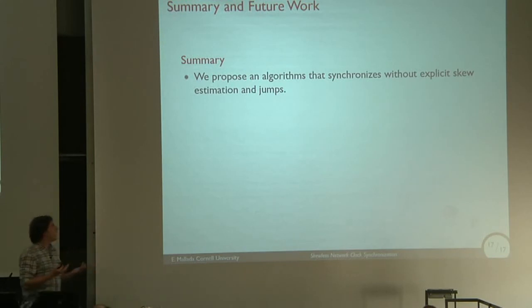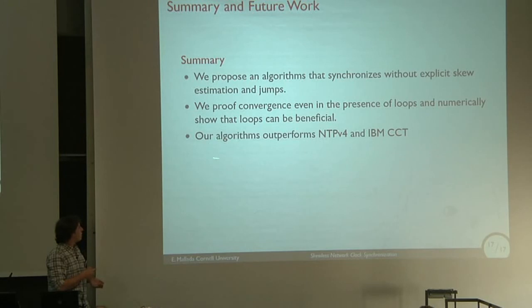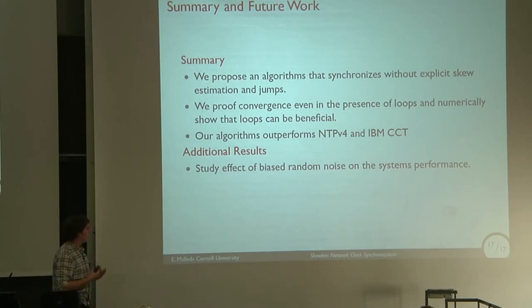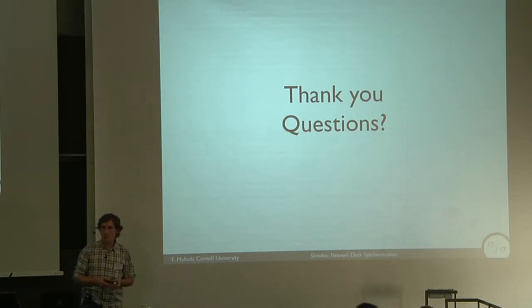In summary, we propose an algorithm that can synchronize without explicitly measuring or estimating the frequency error between the different clocks, and also without these types of steep jumps in the corrections. We improve convergence even in the presence of loops, which is something that was usually avoided for all the standardized protocols. We even showed these loops, when you use them, can be beneficial to minimizing the offset errors of the network. Our algorithm also outperforms NTPV4 and IBM CCT. We also have additional results not presented in this paper on studying the effect of noise and bias information in the offset, and we're able to optimize the parameter values. This concludes my talk. Thank you.